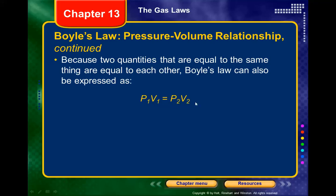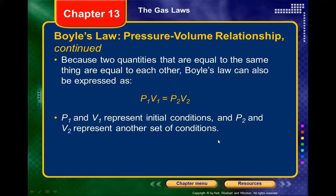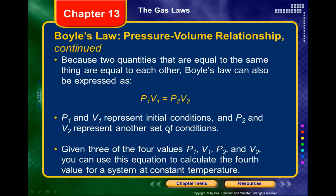So P1V1 = P2V2, where the ones represent initial conditions and the twos represent the new conditions. Most of the time on these problems, you're given three out of these four variables and you solve for the fourth one — you'll be given initial pressure and volume and one new value, then solve for the unknown.